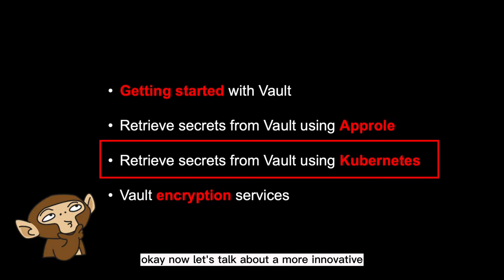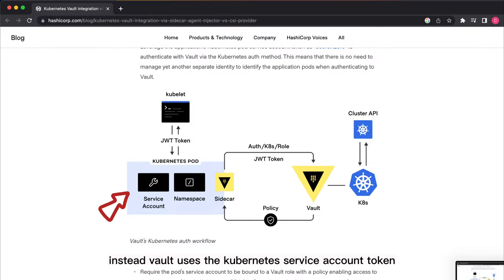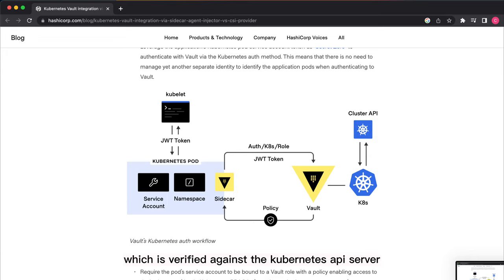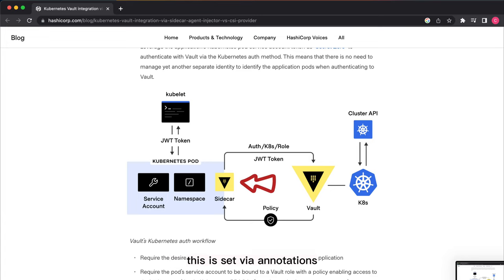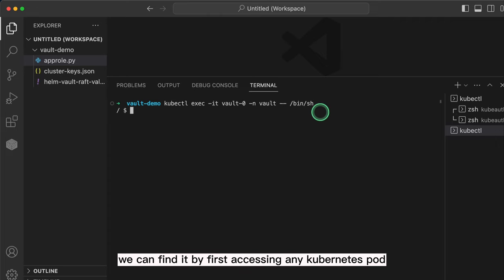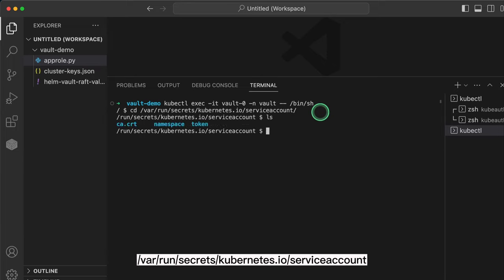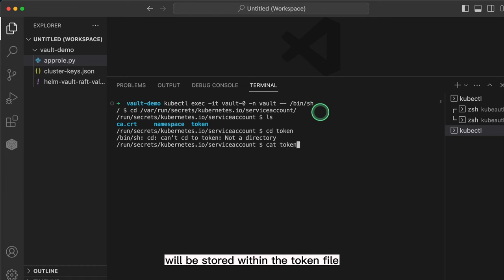Now let's talk about a more innovative way of retrieving secrets. Vault provides the Kubernetes auth type, which allows your application running in Kubernetes to get secrets from Vault without the static credentials that we saw with the app role auth type. Instead, Vault uses the Kubernetes service account token to authenticate against Vault, which is verified against the Kubernetes API server. To do this, Vault injects a sidecar to every pod deployment, set by annotations in the application's deployment manifest. The sidecar will mount the secrets to the application container and will even keep it updated when secrets or policies are changed within Vault. Every Kubernetes pod will have a service account. We can find it by navigating to /var/run/secrets/kubernetes.io/serviceaccount and the service account token will be stored within the token file. This is the token that is used to authenticate against Vault to retrieve secrets.